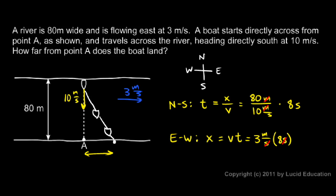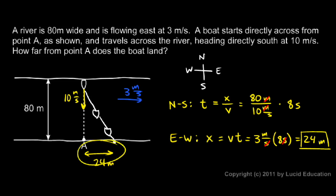The time is the same for the horizontal and the vertical — it starts here and ends there after a certain time. So we just multiply velocity times time: 3 meters per second times 8 seconds. The seconds cancel and we're left with 8 times 3, which is 24 meters. That's our answer — 24 meters. That's how far downstream from point A the boat hit the opposite shore.